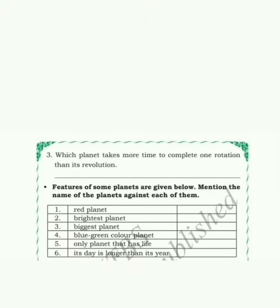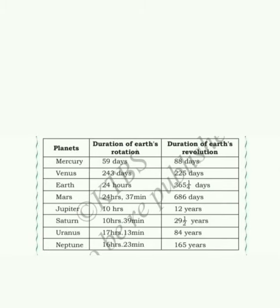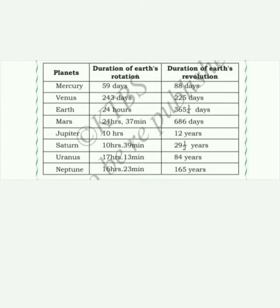Third question: Which planet takes more time to complete one rotation than its revolution? Venus takes 243 days for rotation and 225 days for revolution. When comparing rotation and revolution, Venus's rotation time is more. So Venus is the planet that takes more time to complete one rotation than its revolution.